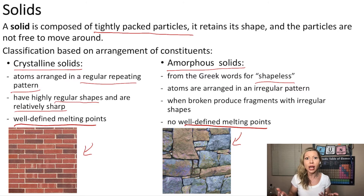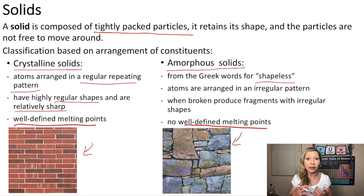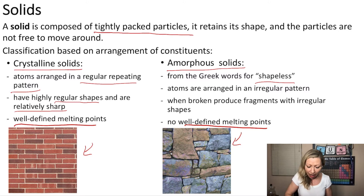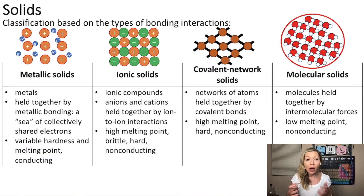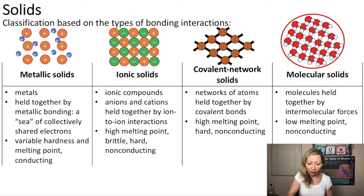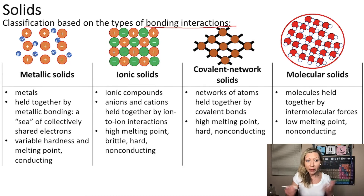From here it makes sense to use a different type of classification, because solids can be made of molecules, atoms, or ions and we have to be able to classify that. So we can use a classification based on the types of bonding interactions.